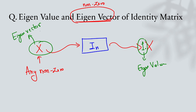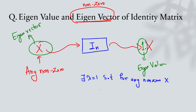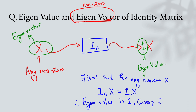Now let me write it formally. My eigenvalue is 1. There exists a lambda equal to 1 such that for any non-zero X, I times X equals 1 times X. Therefore the eigenvalue is 1. The corresponding eigenvector is any non-zero X. That means the identity matrix has all its eigenvalues equal to 1 and any non-zero vector will become its eigenvector.